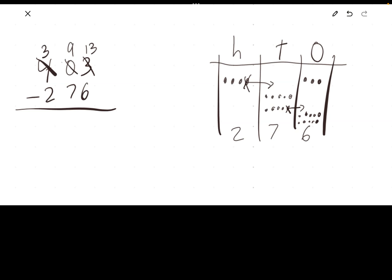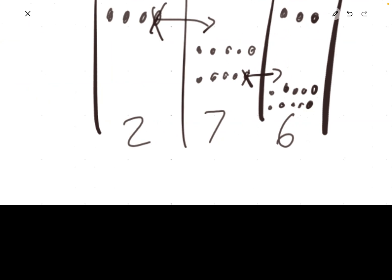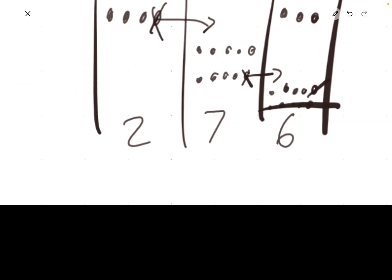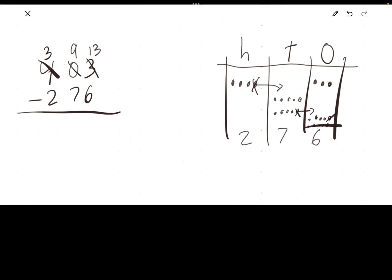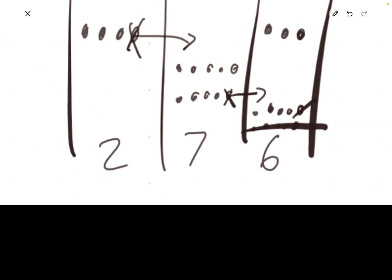And then you just cross out what you need to cross out. So, I need to cross out 6 of these ones, so that's 5, 6, 13 minus 6 is 7, and I can just count what's left here, 1, 2, 3, 4, 5, 6, 7.